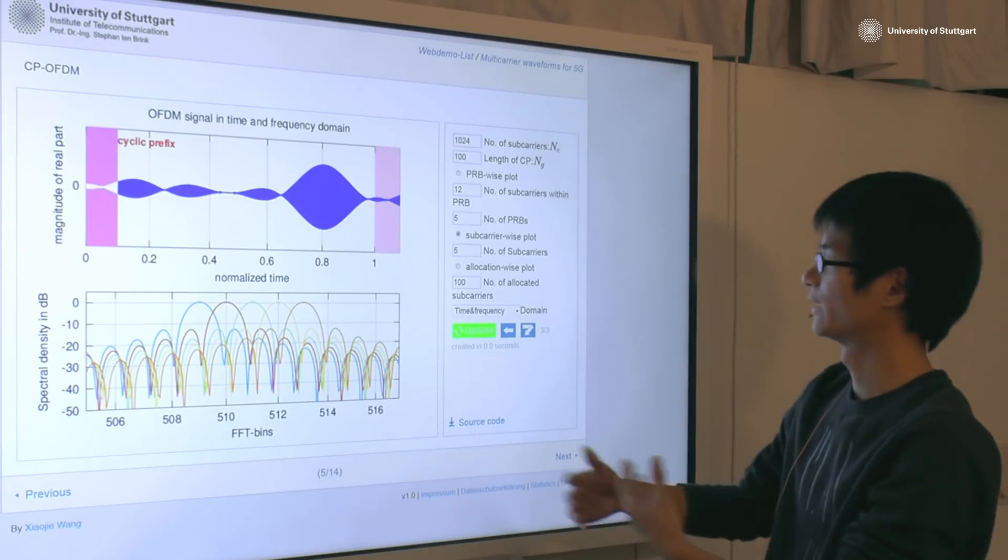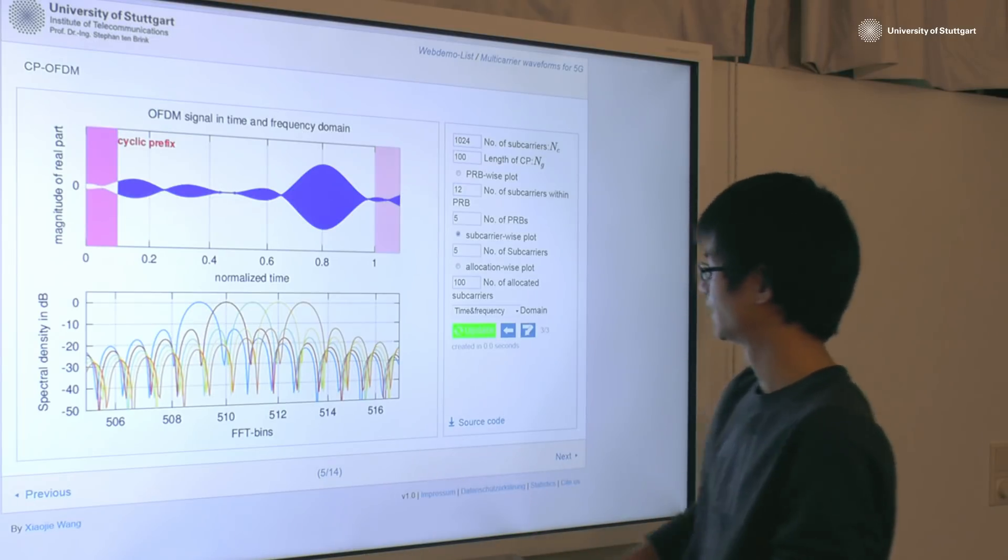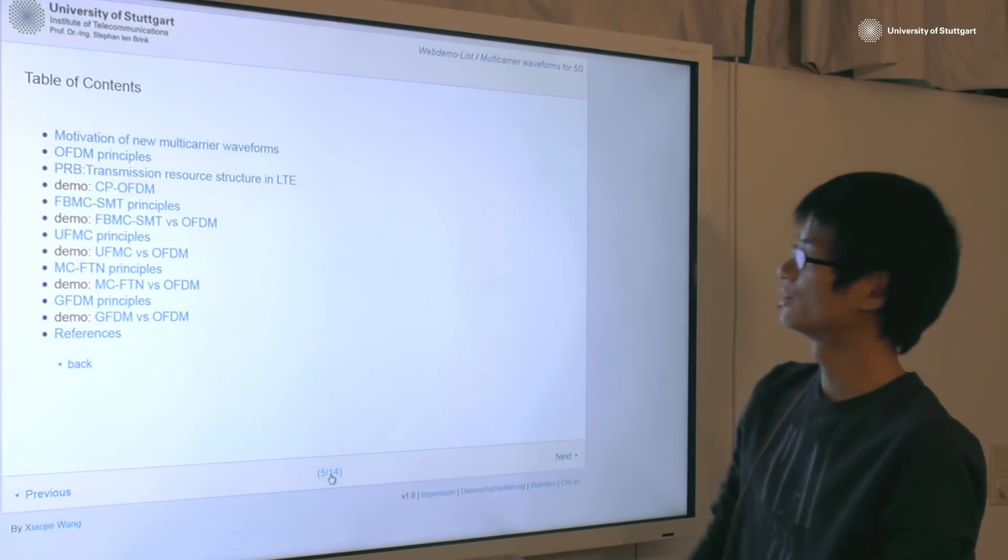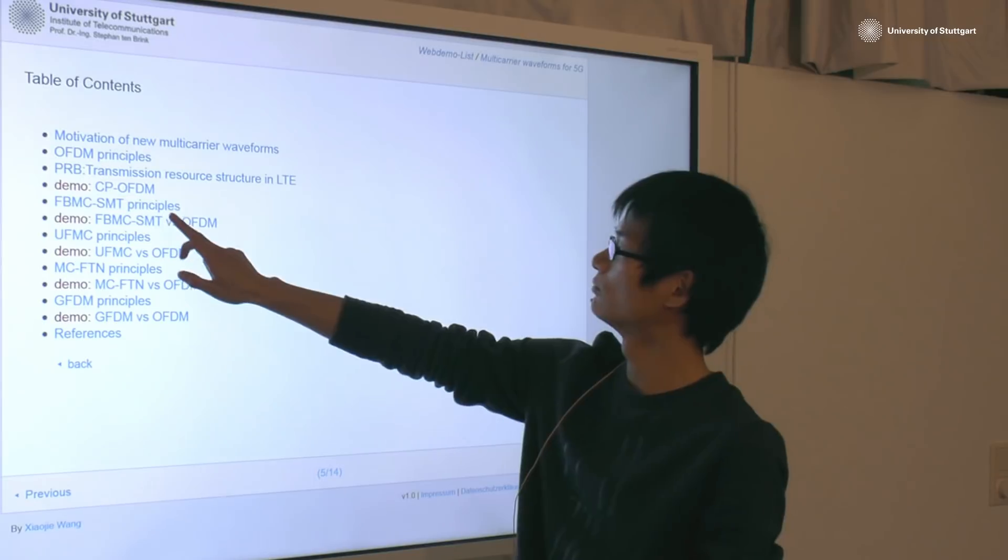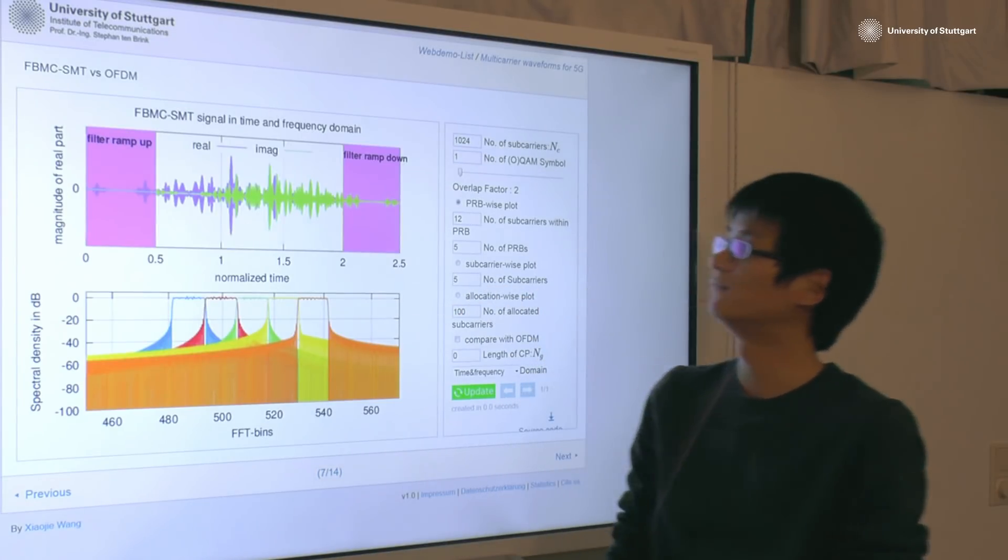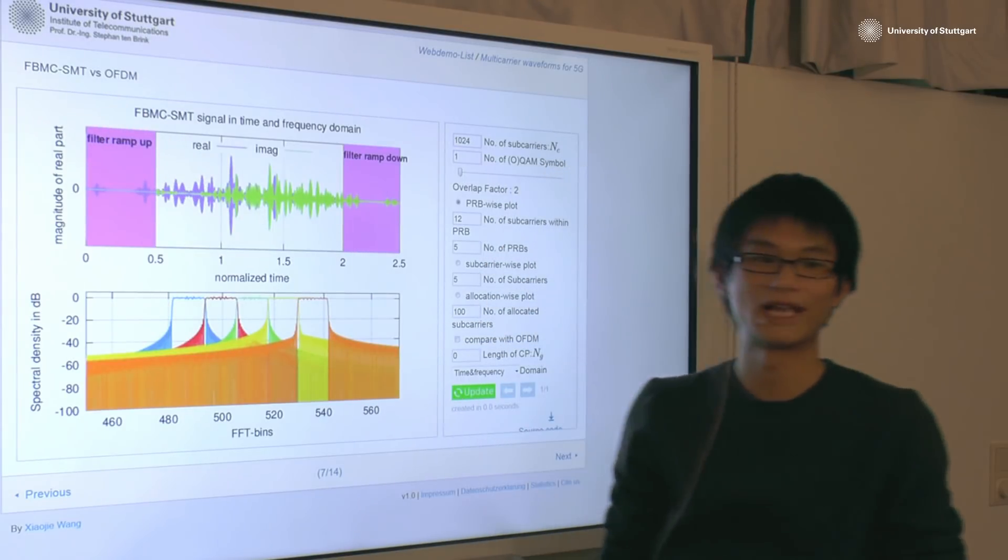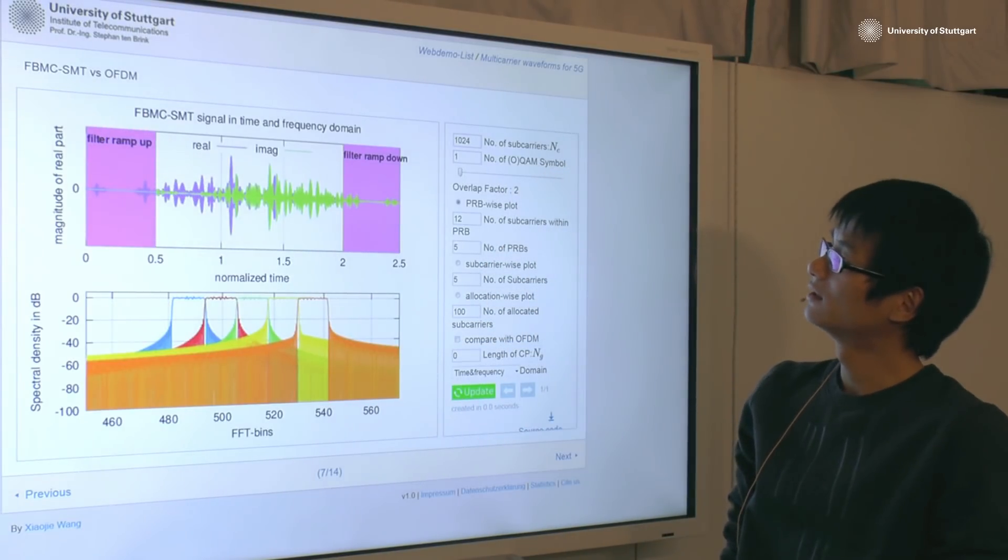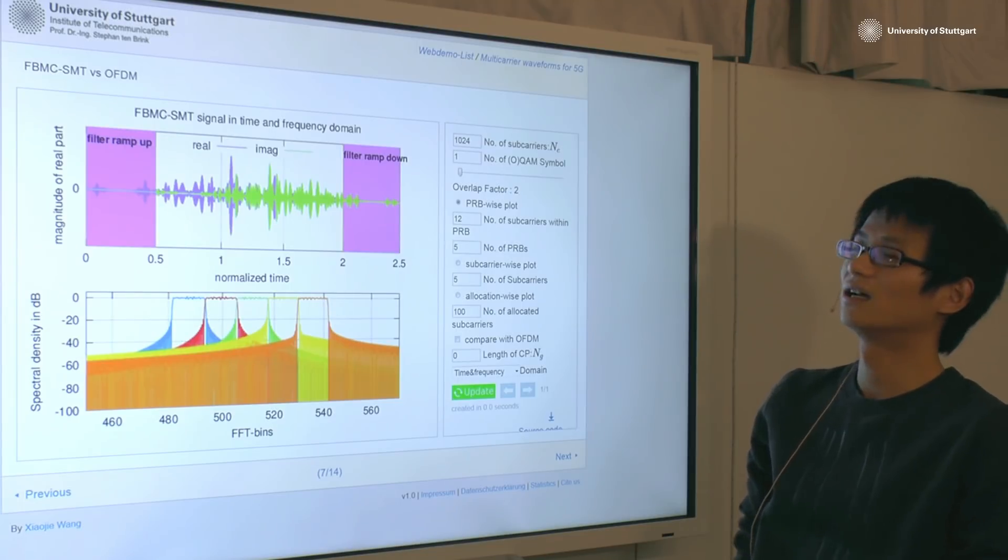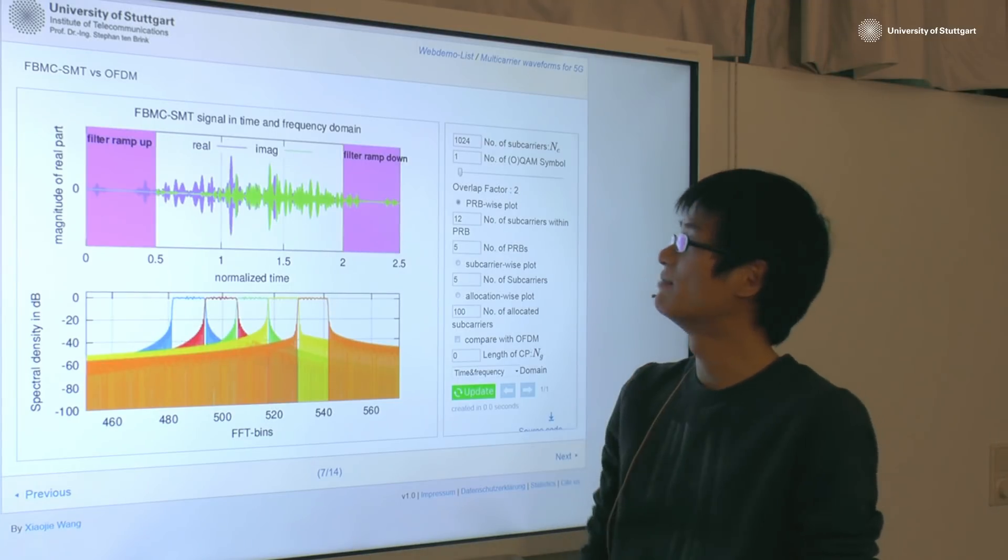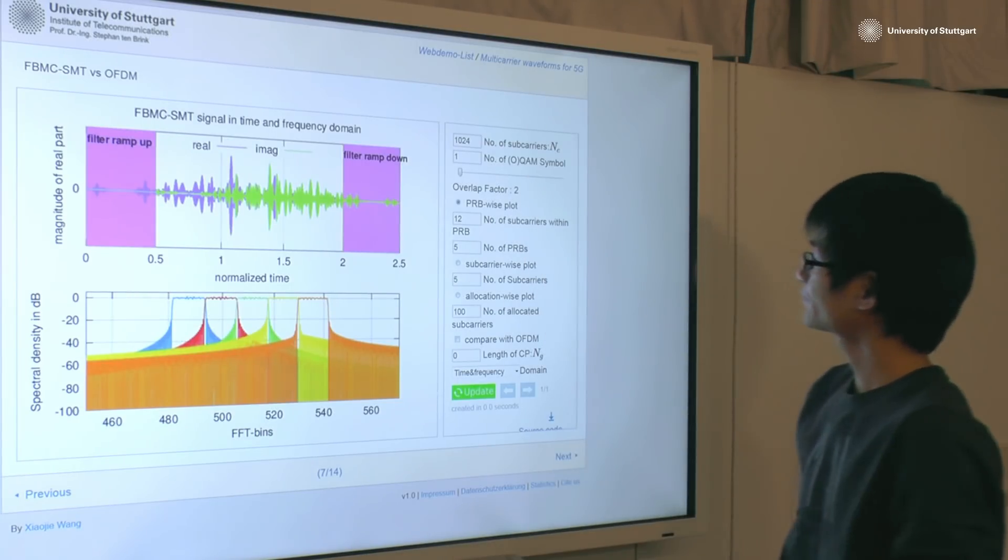Another very interesting modulation scheme is so-called Filterbank multi-carrier and in its staggered multi-tone variation. This is also known as pulse shaping OFDM with offset QAM.